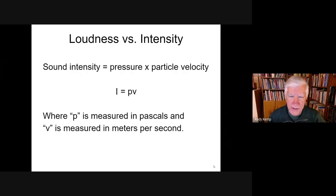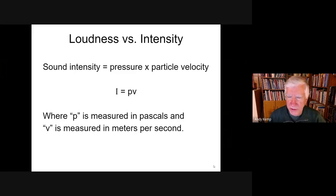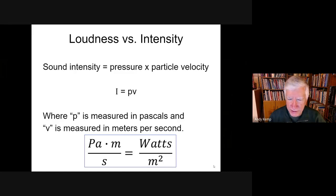Sound intensity is found by making two measurements: pressure and particle velocity — how fast the particles carrying the sound are moving. The equation for sound intensity is pressure times particle velocity, where pressure is measured in Pascals and velocity in meters per second. That mixed unit — Pa × m/s — translates to a power per area: watts per meter squared.